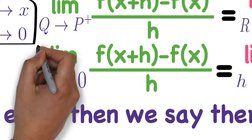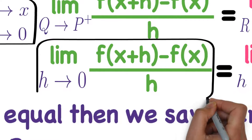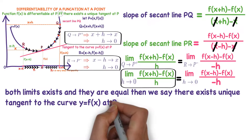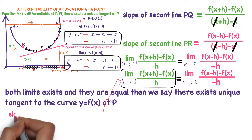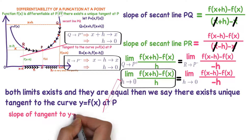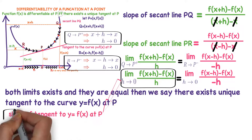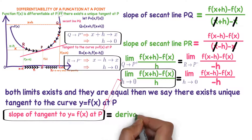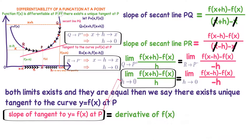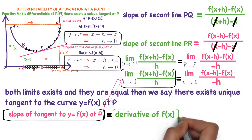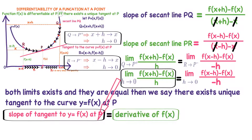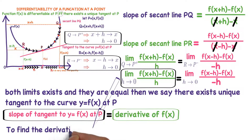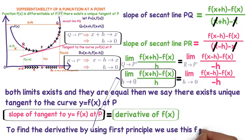Observe this expression — it is very important: limit as h tends to zero of [f(x+h) − f(x)] / h. This is the slope of the tangent to the curve y = f(x) at point P, also known as the slope of the curve at point P, which is also called the derivative of f(x) at point P. The derivative of a function is nothing but the slope of the tangent to the curve. To find the derivative of a function using the first principle, we use this formula.